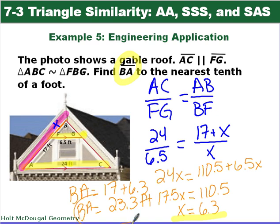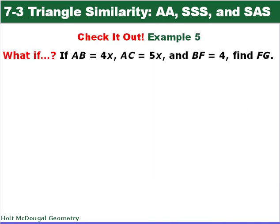Now try this: using the same gable roof picture, if AB is 4x, AC is 5x, and BF is 4, find FG.